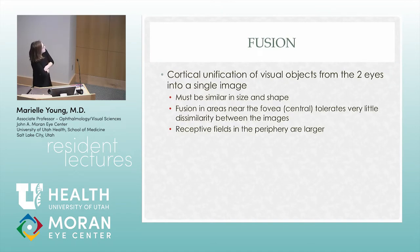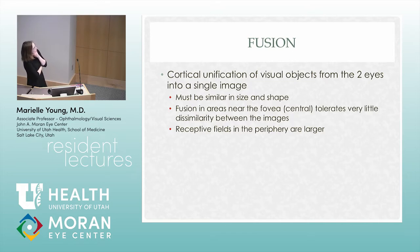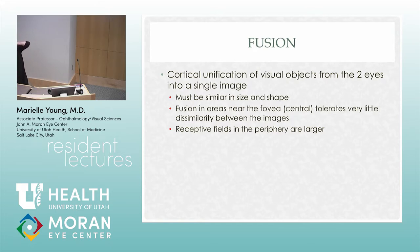Your brain is what puts together the binocular image for a normal visual experience. The images have to be similar in size and shape — something you think about in cataract surgery, because you don't want to make somebody really anisometropic. When you can't fuse the images, that's something we call anisoconia.